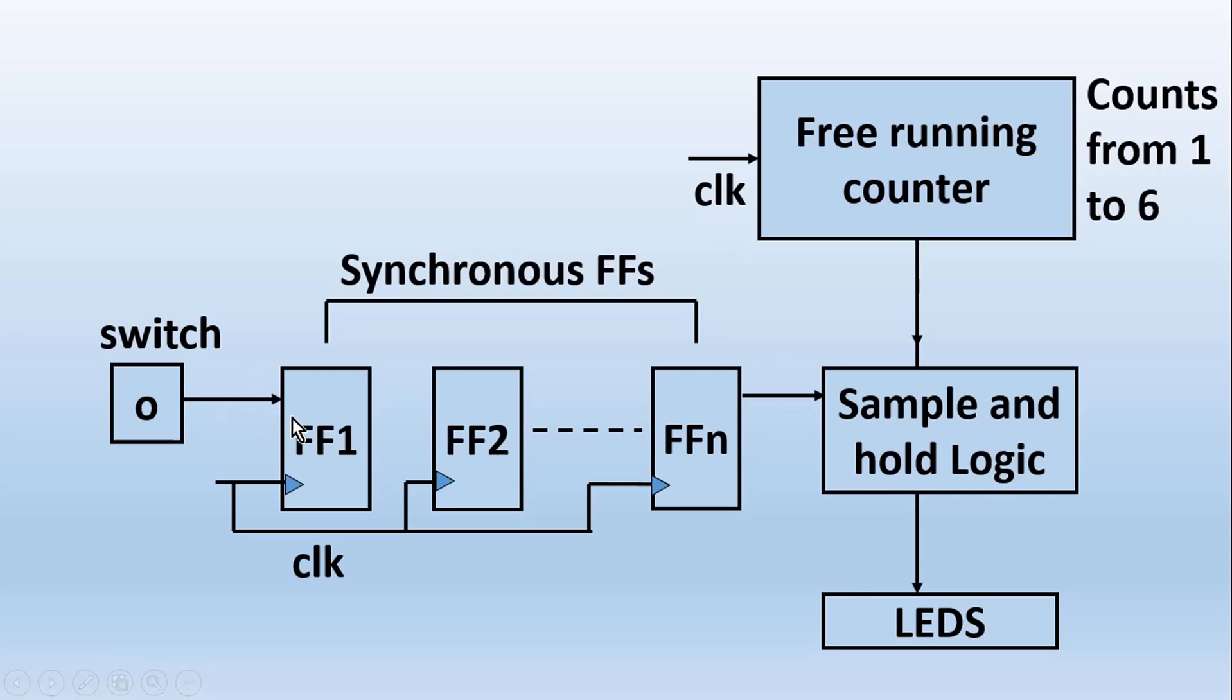Once this asynchronous input is synchronized with this clock and it is applied to sample-and-hold logic, what it will do—in one particular implementation, let's say when this input is high, the output value of this counter will be passed at the output of sample-and-hold logic. When this input goes low, we need to hold the output value. This is very simple logic. This way, whenever we press a button, we are not sure what is the output of this counter, and we are going to latch a random value here. This way we will be able to display a random value on the LEDs each time we press this button, and this will form an electronic dice.